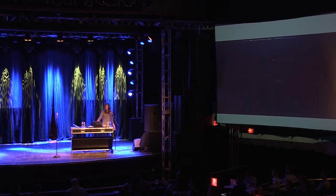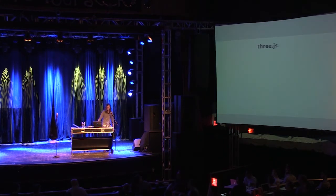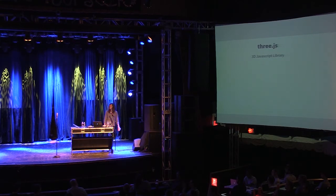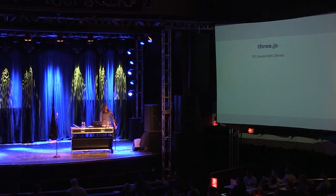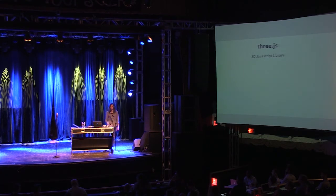Most of these examples were made with the help of Three.js. Three.js is a 3D JavaScript library released in 2010 by Ricardo Cabello, also known as Mr. doob. The advantage of using a 3D library like Three.js is that what would take you hundreds of lines of code with raw WebGL, you can do with just a few lines in Three.js.